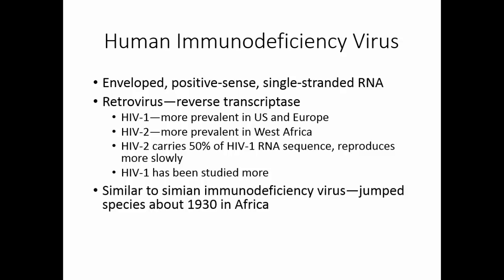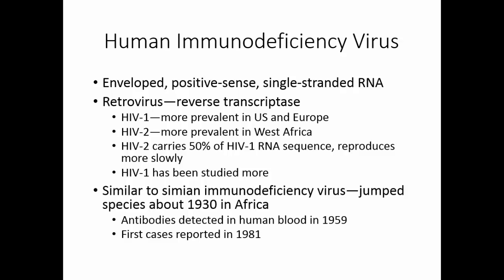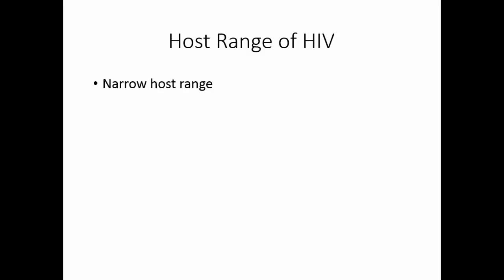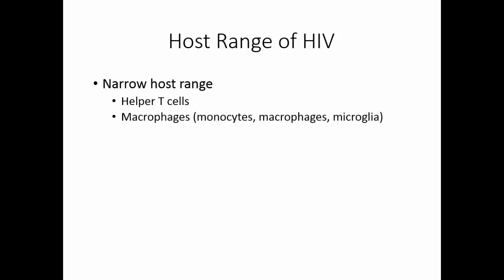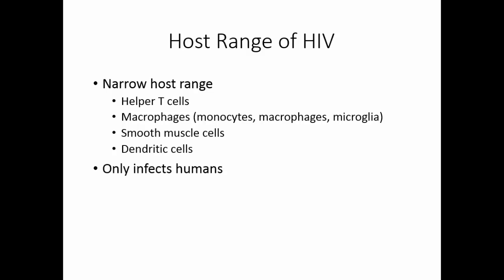We're not sure how, but somehow the virus started infecting humans. In this country, we've detected antibodies in human blood from as early as 1959. However, the first cases were not reported until 1981. HIV has a very narrow host range. It only likes helper T cells, things in the macrophage family — monocytes, macrophages, microglia in the central nervous system. It will also attack smooth muscle cells and dendritic cells. And it only infects humans.